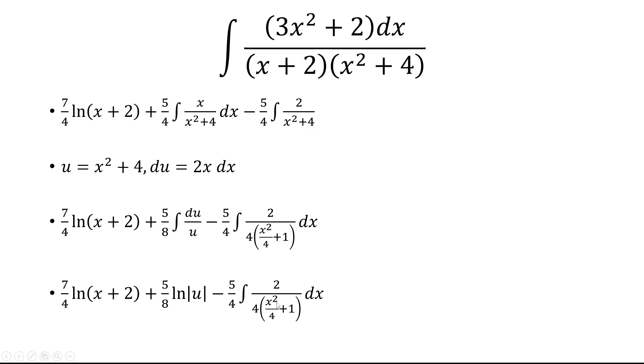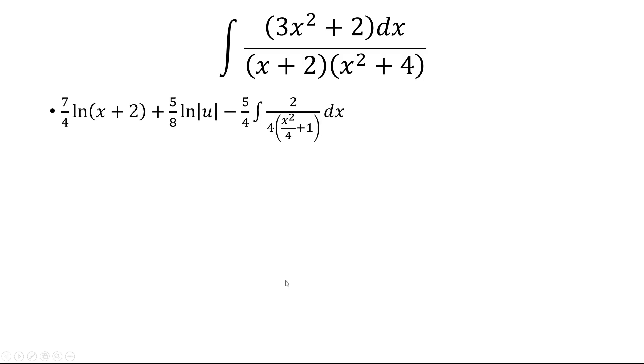So now this 4 and 2, so 2 over 4 becomes 1 half. When you bring that over, 5 fourths times 1 half is 5 eighths. u we said was x squared plus 4.